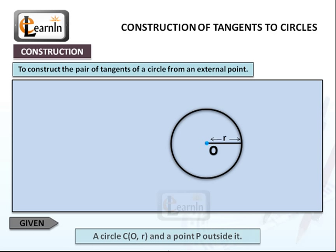Given: A circle C(O,r) and a point P outside it.